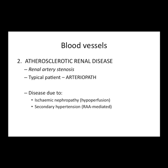The other big problem is atherosclerosis — linked with hypertension but affecting larger vessels, particularly the renal arteries. This is what we call renal artery stenosis. The typical patient is an arteriopath: male, family history, smoker, diabetic, high blood pressure and high cholesterol. Because they have narrow renal arteries, they get hypoperfusion, which on a chronic basis leads to loss of tubules — the functional unit of the kidney.